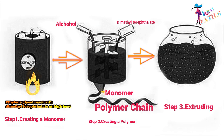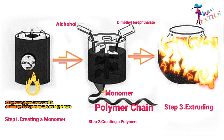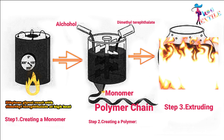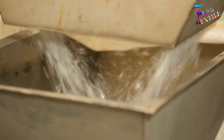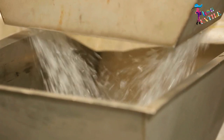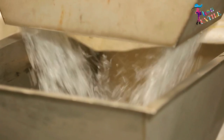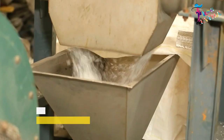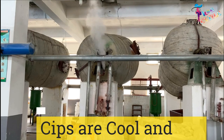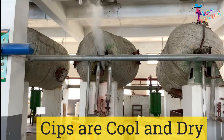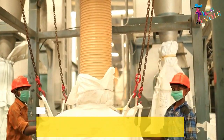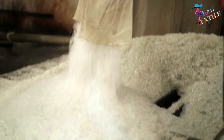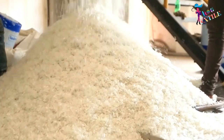Step 3: Extruding. This molten polyester polymer is extruded from the reaction chamber in long stripes, and the stripes are allowed to cool and dry, and then they are broken apart into small pieces.